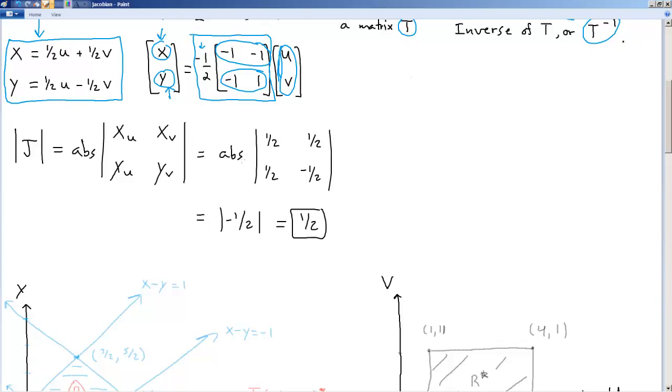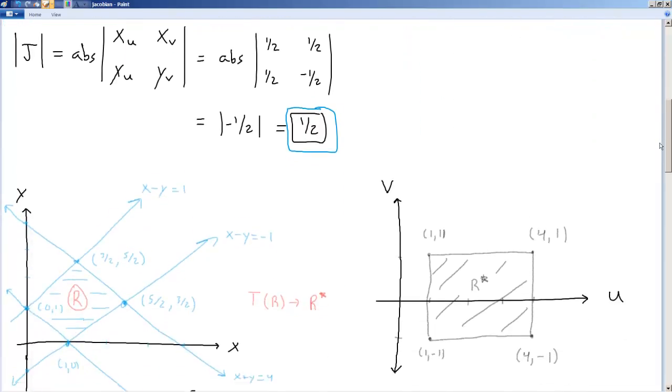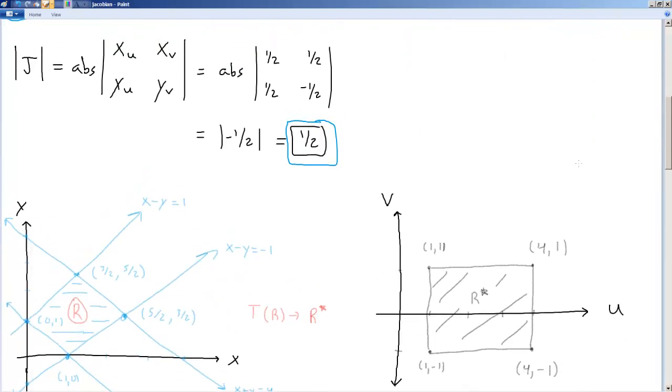So that's just the absolute value of 1 half, 1 half, 1 half, negative 1 half. And the absolute value of that is absolute value of negative 1 half, which, lo and behold, is the absolute value of the determinant, right? This is the absolute value of the determinant of the original matrix. So there you have it. Useful linear algebra fact, which is true for all linear transformations.